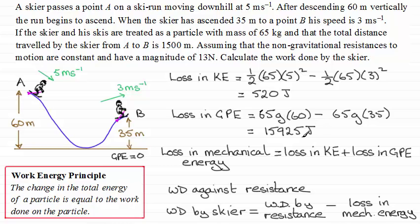So now we've just got to work out the loss in mechanical energy, which is going to be the loss in kinetic energy plus the loss in the gravitational potential energy. So if I just replace that then with the values that we've got, that is going to be 520 plus 15,925. And if you total that, you end up with 16,445 joules. That's our loss in mechanical energy.